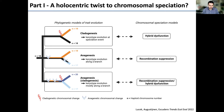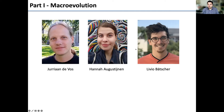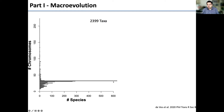Now let's look at the data. We went to the literature and identified almost 2,400 Lepidoptera taxa with chromosome counts. Most species have about 30–31 chromosomes, but this is not equally distributed across genera. Some genera are very diverse in chromosome numbers — like Polyommatus, with more than 200 chromosomes — while others, like Morpho, show very little variation in chromosome numbers.